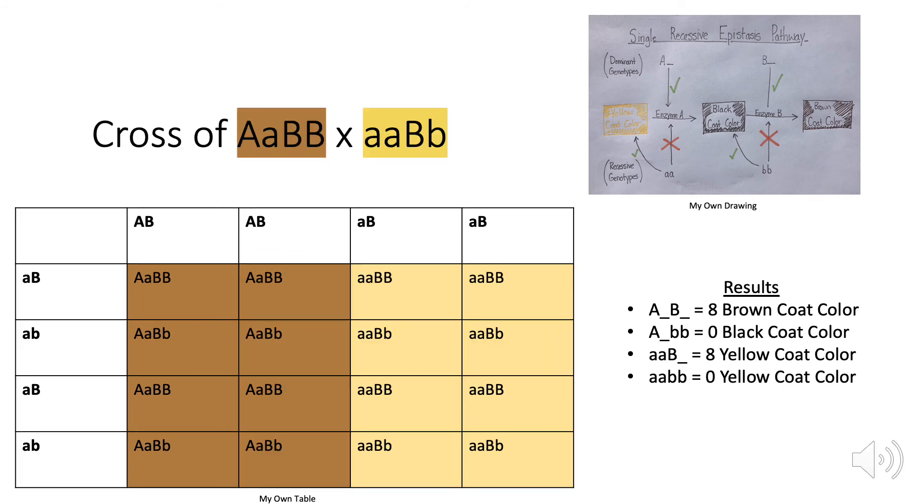This is a cross between one parent who has the phenotype of brown coat color and one parent who has the phenotype of yellow coat color. Since this cross is not a dihybrid cross, we should not expect the nine to three to four ratio that is usually associated with the single recessive epistasis.